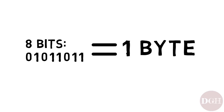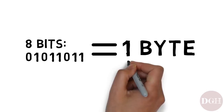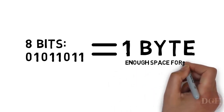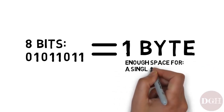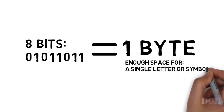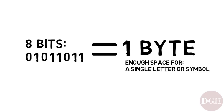In everyday terms, you can think of one byte as the amount of space it takes to store one single letter or symbol in a text document. So if you wrote a short story with a thousand words, this would require about a thousand bytes of storage space.